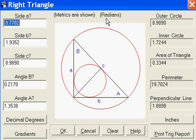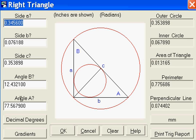And you can look up here, metrics are shown, radians. Well, we'll go back to inches. There's inches and radians. We'll go to decimal degrees and we're back to decimal degrees.